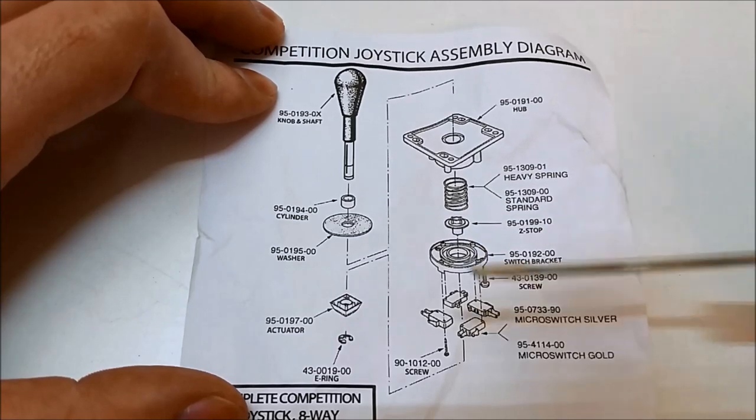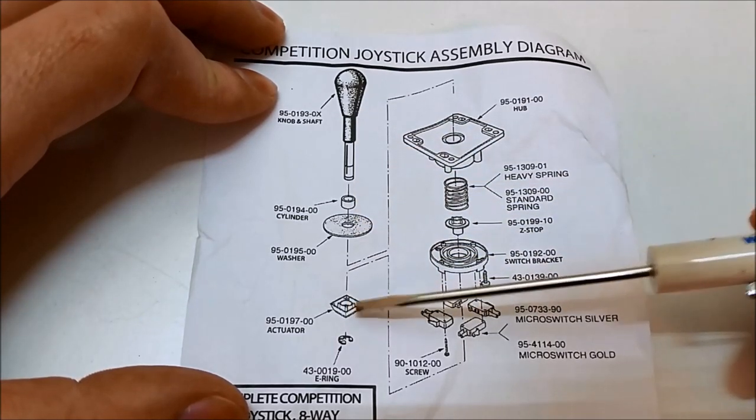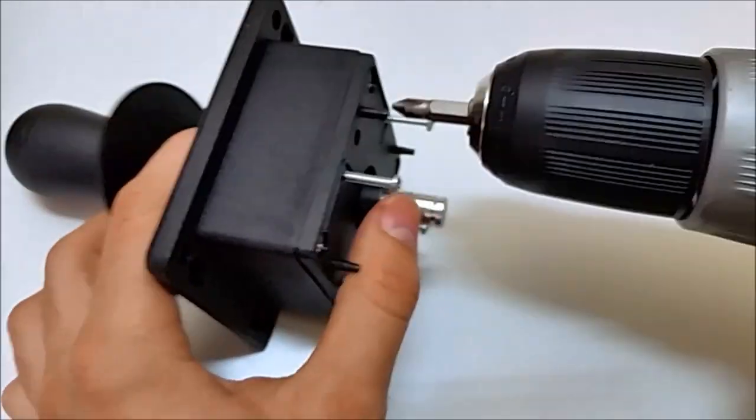When you purchase them they come with an assembly diagram so you know how to put them together. The basic components are the hub, spring, z-stop, switch bracket, micro switches, shaft and actuator, and we're gonna replicate all those parts.